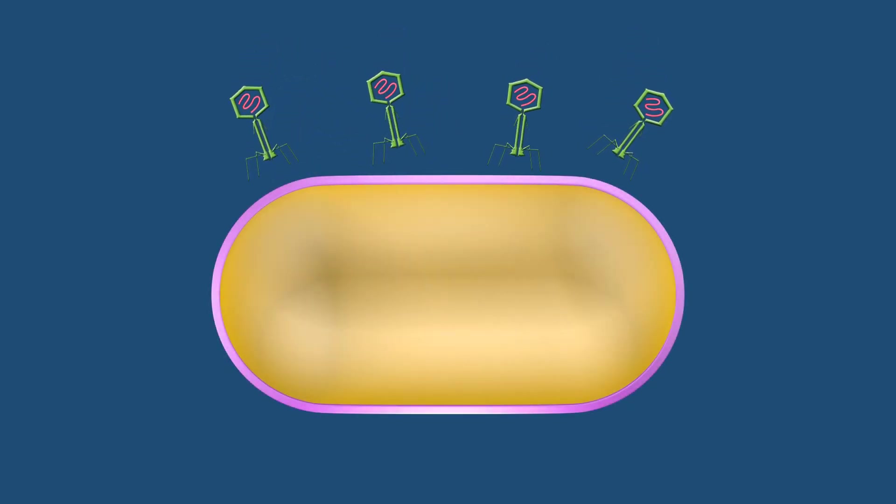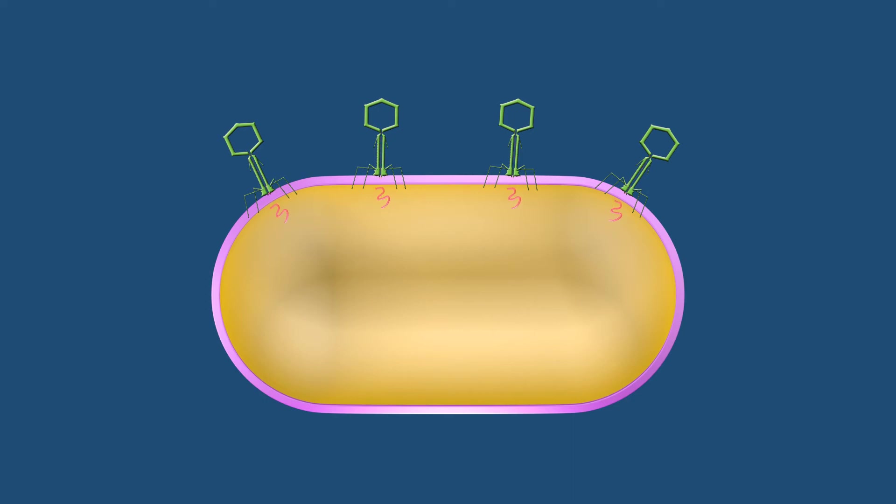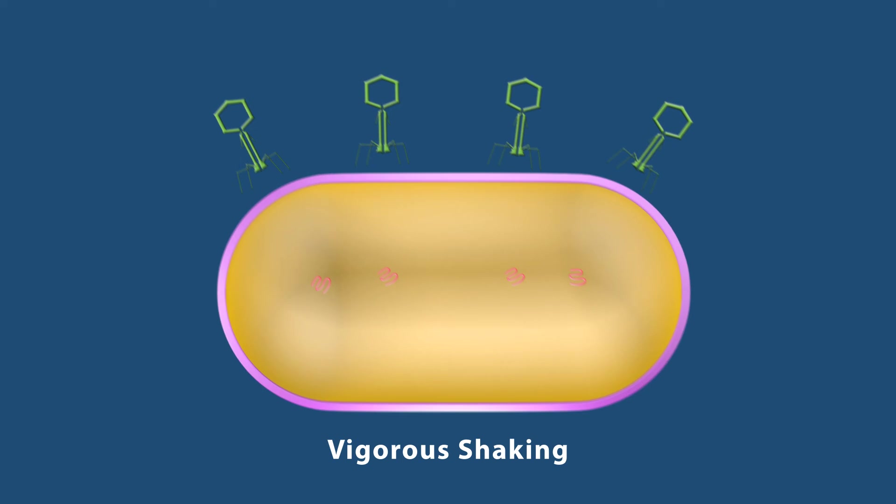When the phage infected the bacteria, the 35P labelled DNA entered the cell and could be found in phage subsequently produced in the infected bacteria.